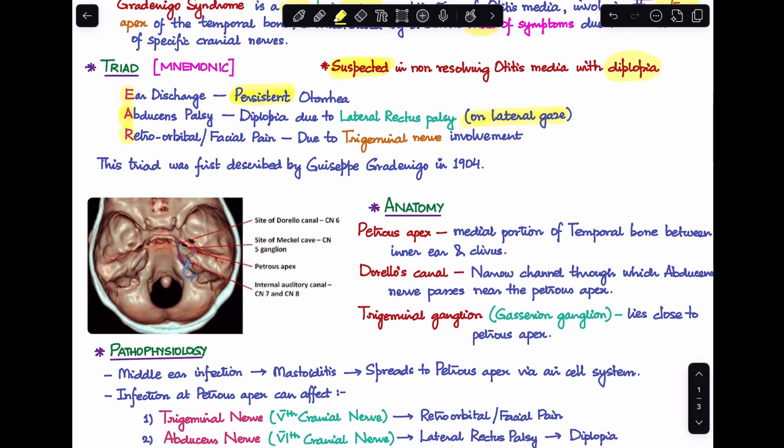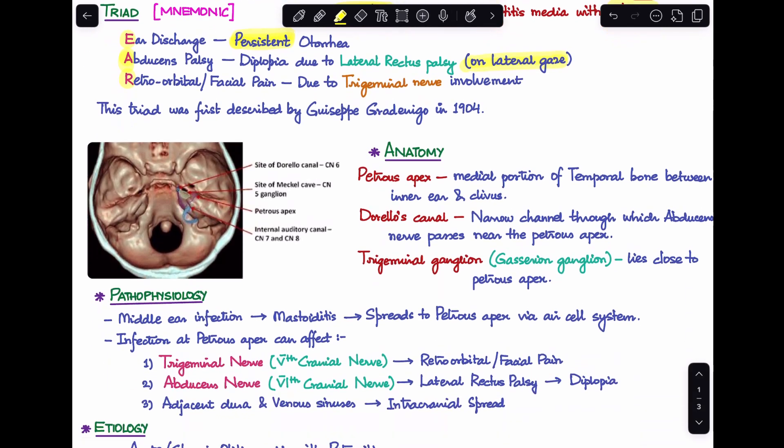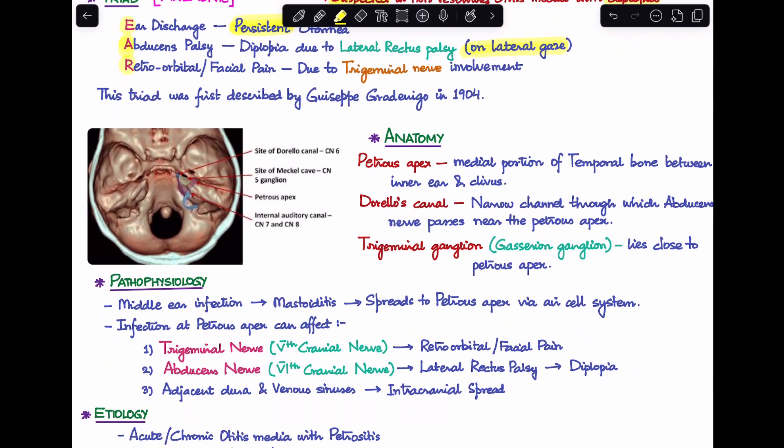Let's understand the anatomy a little bit to understand why we are seeing the typical triad of features. The important anatomical part is that this is in relation to the petrous apex. Petrous apex is the medial portion of the temporal bone which is lodged in between the inner ear and clivus. We have seen that there is a fifth and a sixth nerve palsy. First of all, there's a structure known as Dorello's canal. This is a narrow channel through which the abducens or sixth cranial nerve passes near the petrous apex.